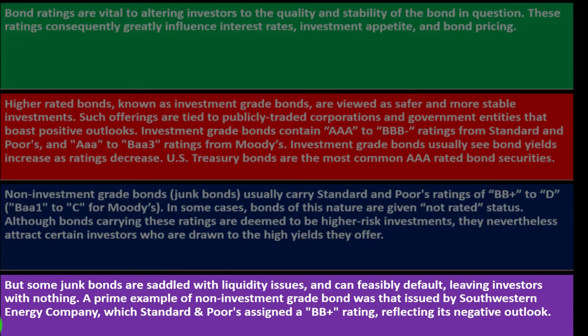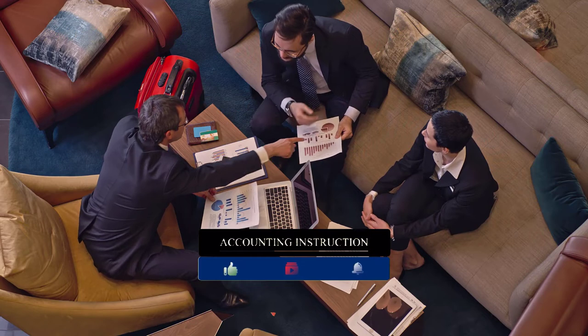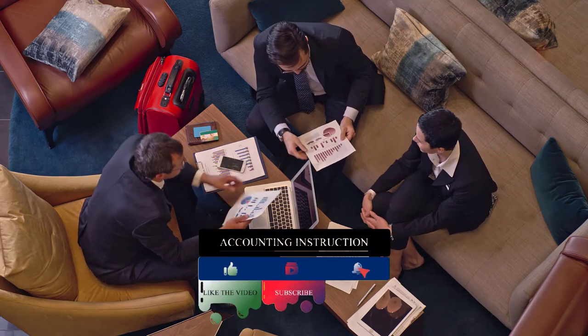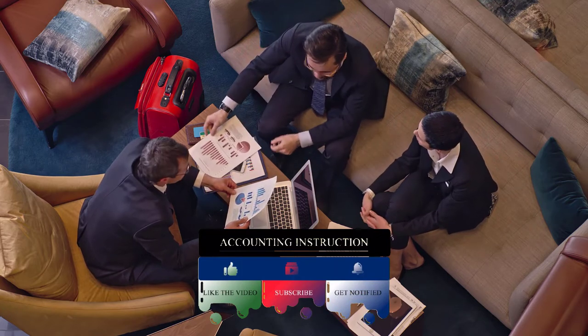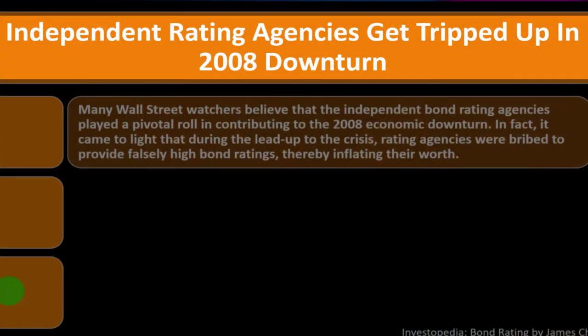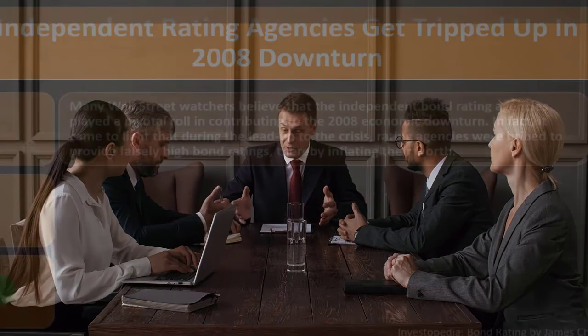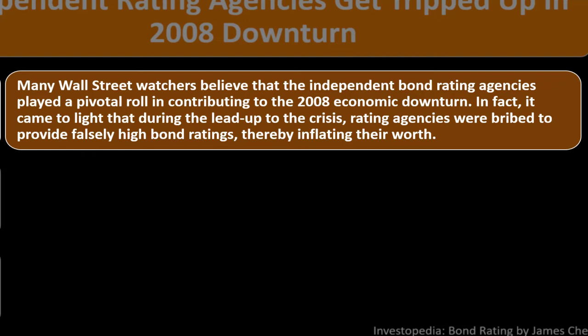A prime example of a non-investment grade bond was that issued by Southwestern Energy Company, which Standard and Poor's assigned a BB-plus rating reflecting its negative outlook. Regarding the 2008 downturn, rating agencies got tripped up. There's a lot of blame to go around for that recession, but many things went wrong. Part of it was a loss of faith in rating agencies, banks, and the government's behavior — particularly how big companies seemed to play on a different field without the same risks as others.